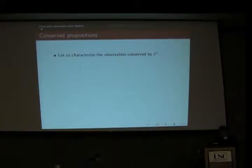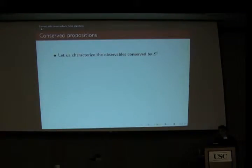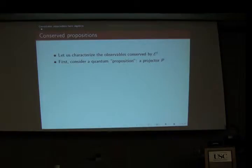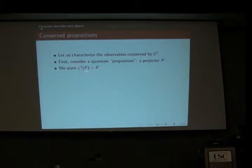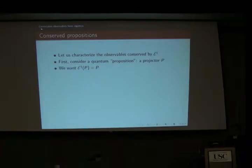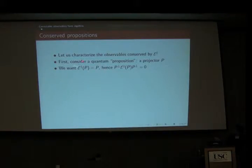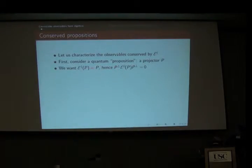I will use this picture to characterize the observables which are conserved by the channel — meaning they are fixed by it. I will begin with the simplest quantum observables: a projector, which is a two-level observable or proposition in a quantum system. If P is fixed by the channel, I can take the projector on the orthogonal subspace. The product of the orthogonal projector and P is zero, which implies a relation by multiplying on the left and right by the orthogonal projector.